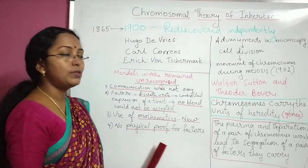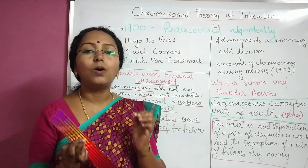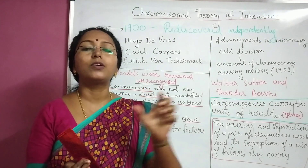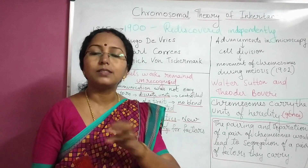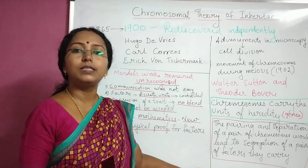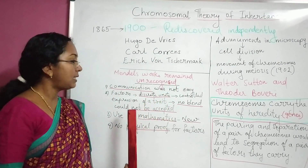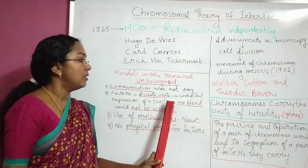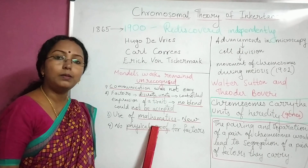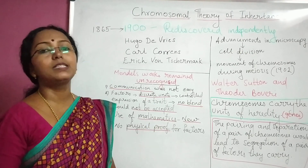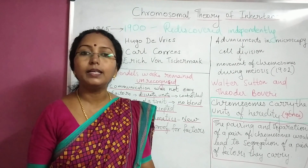The fourth and most important point — he kept telling that these are factors, these are discrete units, but he could not provide a physical proof for his findings. All his findings were based on mathematical calculations; he could not provide physical proof. So it remained unrecognized. To summarize: communication was not easy; terms like factors and discrete units were not acceptable; use of mathematics was new in biological sciences; and he could not provide any physical proof for the factors he had framed. Because of these reasons, his work remained unrecognized till 1900.